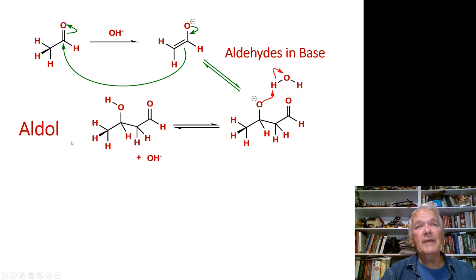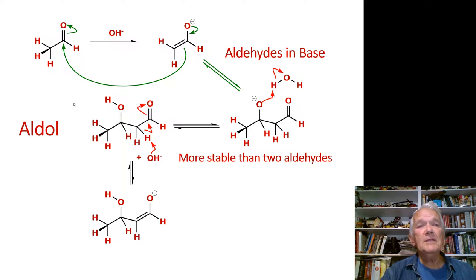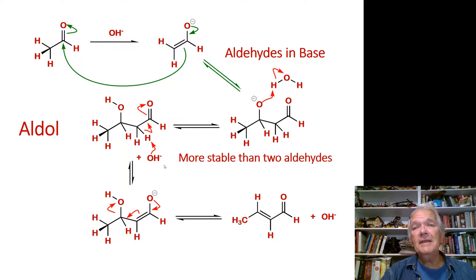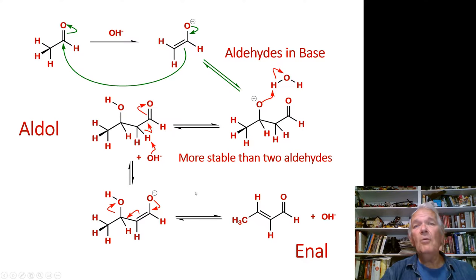The aldol can react with base to do an elimination because the beta hydrogens are very acidic. You deprotonate there to form a new enolate, but this enolate has an easy way of getting rid of the negative charge: it reforms the carbonyl, moves the double bond over, and kicks out the hydroxide. The resulting compound is called an enal — an aldehyde with an alkene. This works because the enal is more stable than two separate aldehydes; you've gained a carbon-carbon bond. The aldehyde carbonyls were not that stable having only one substituent, so energy is gained overall. This is the aldol condensation.